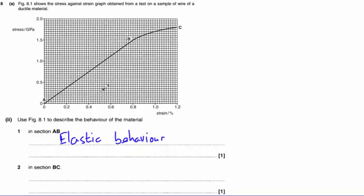In section B C, you can see that Hooke's Law is no longer being obeyed. Stress is no longer proportional to strain, so therefore we can say that this is plastic deformation.